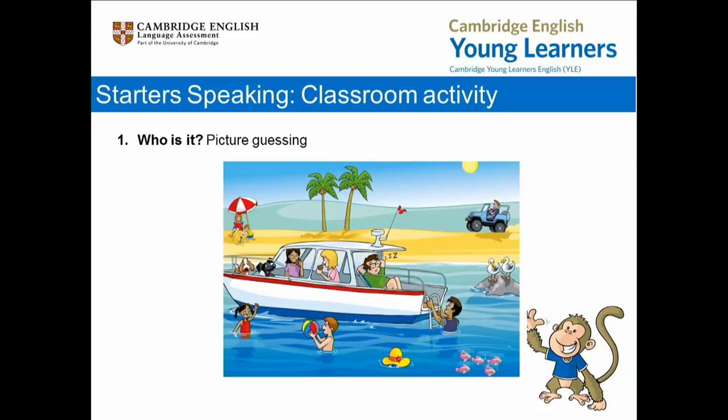I'm going to demonstrate this activity. I am Student A. I'm going to describe a person and I'd like you, Student B, to guess who it is and point to the correct person in the picture. He's a man. He's on the boat. He's wearing a green t-shirt. He's sleeping. I'm sure you guessed it's this man. Now my partner, Student B, has a turn.